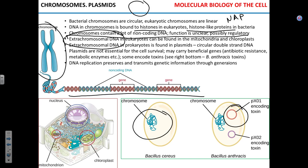In eukaryotes, extrachromosomal DNA found in chloroplasts and mitochondria is essential to the function of those organelles. Plasmids — circular double-strand DNA found in the cytoplasm of bacteria — do not seem to be essential. If you take plasmids out of a microbial cell, the cell will still survive, but it will probably lose some important advantage.